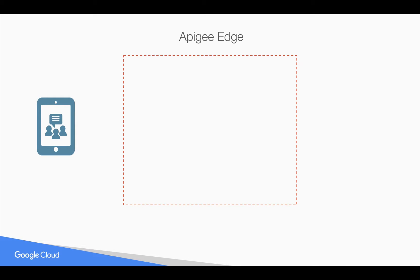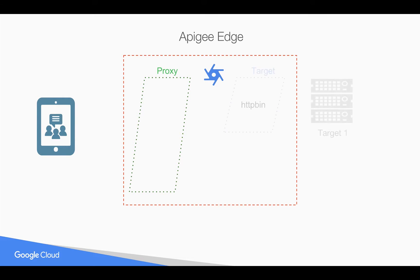As you know, Apigee Edge sits in between the client and the target system where you can create API proxies. An API proxy is divided into a proxy endpoint and a target endpoint. Every target endpoint is mapped to a particular backend target server.